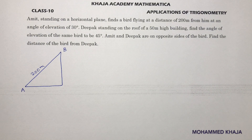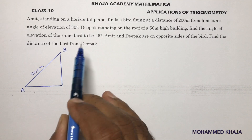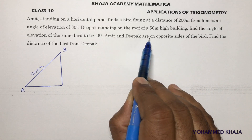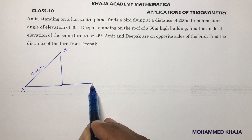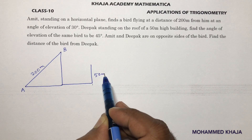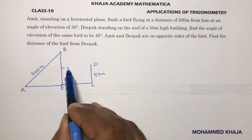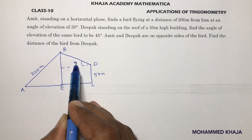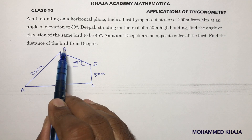Deepak is standing on the roof of a 50 meter high building and finds the angle of elevation of the same bird to be 45 degrees. Amit and Deepak are on opposite sides of the bird. So on the left side is Amit, and here is Deepak at point E on top of a 50 meter high building. Deepak observes the same bird at an angle of elevation of 45 degrees. We need to find the distance between the bird and Deepak.